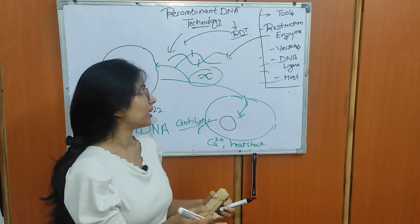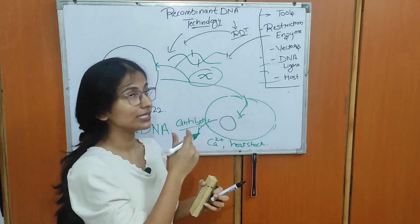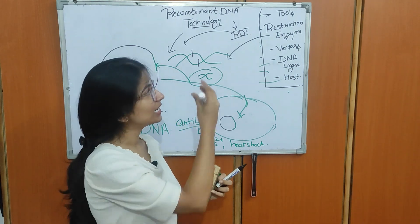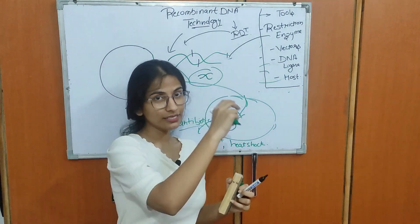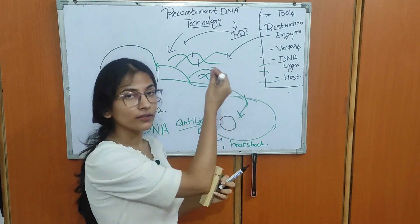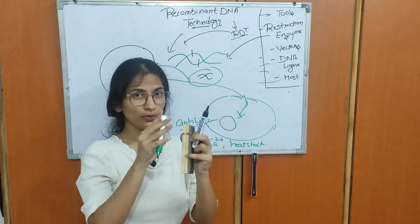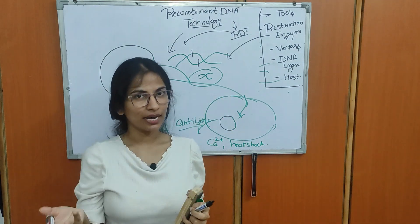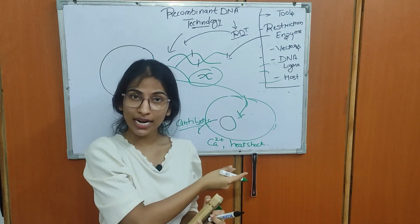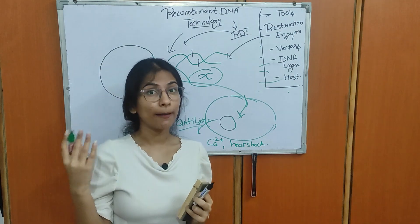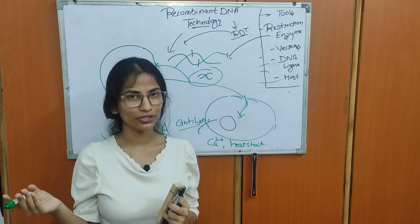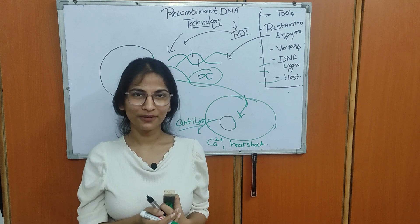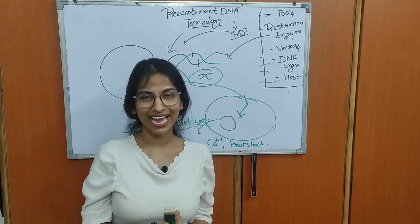This E. coli will now produce the required antibiotic. This was the entire process of recombinant DNA technology. We studied restriction enzymes — the scissors that make the cut; vectors — the vehicles that transport the gene; DNA ligase — the glue that joins the gene and vector together; and the host in which we place the gene to produce the required product. Next we have the applications of RDT which we can study in the next session. Thank you so much.